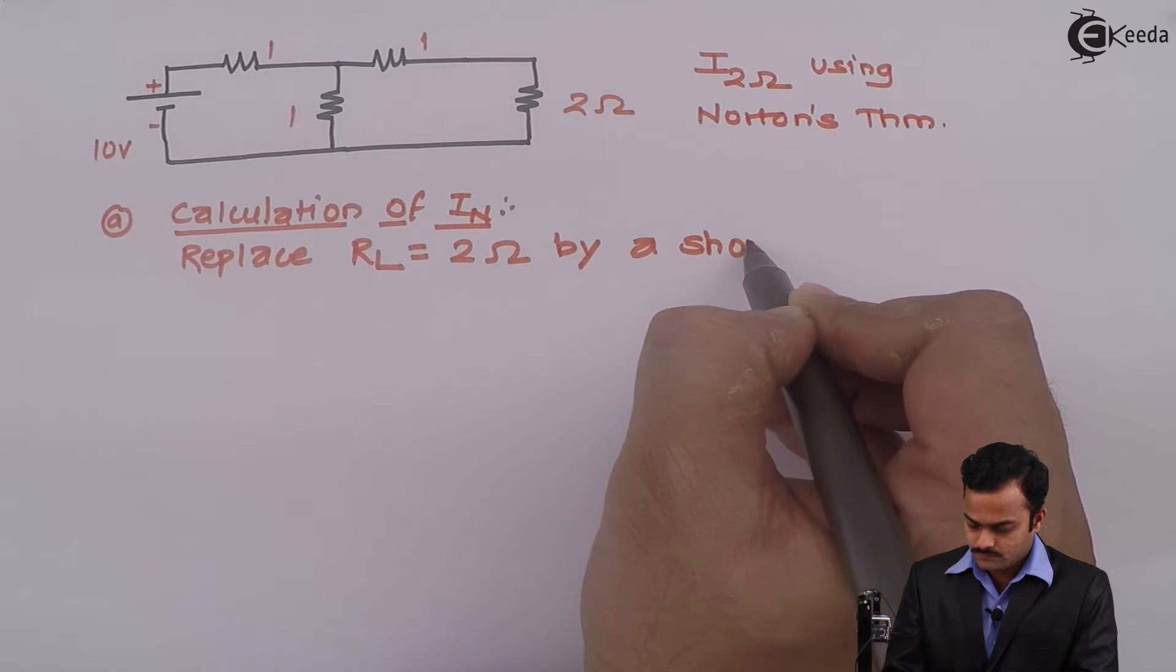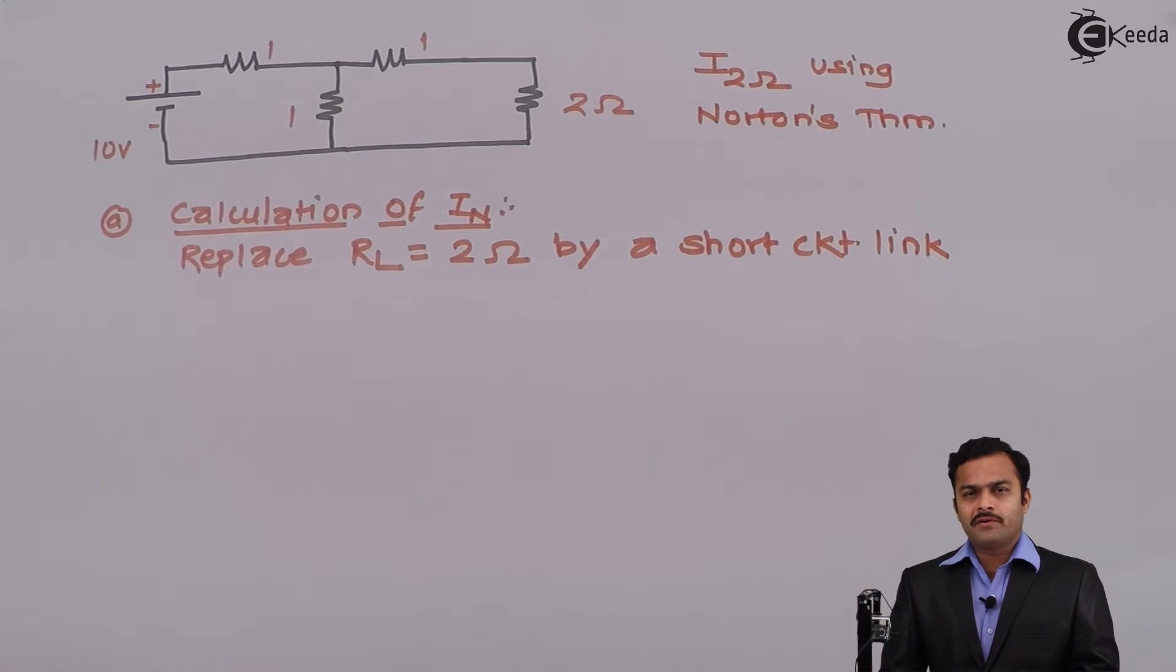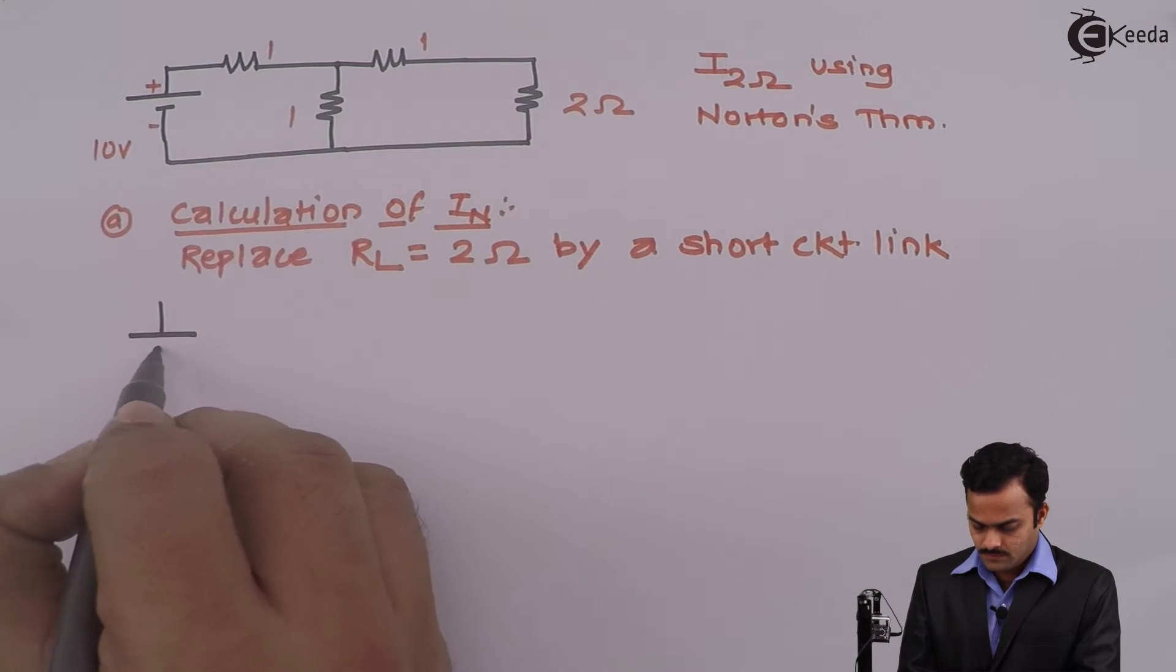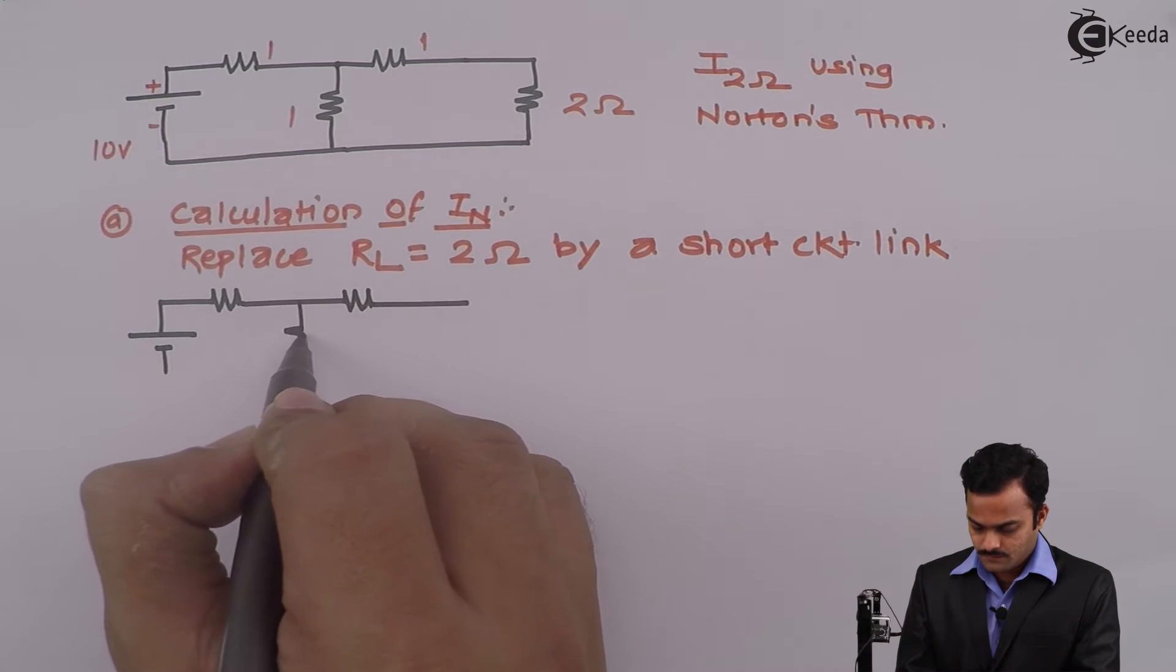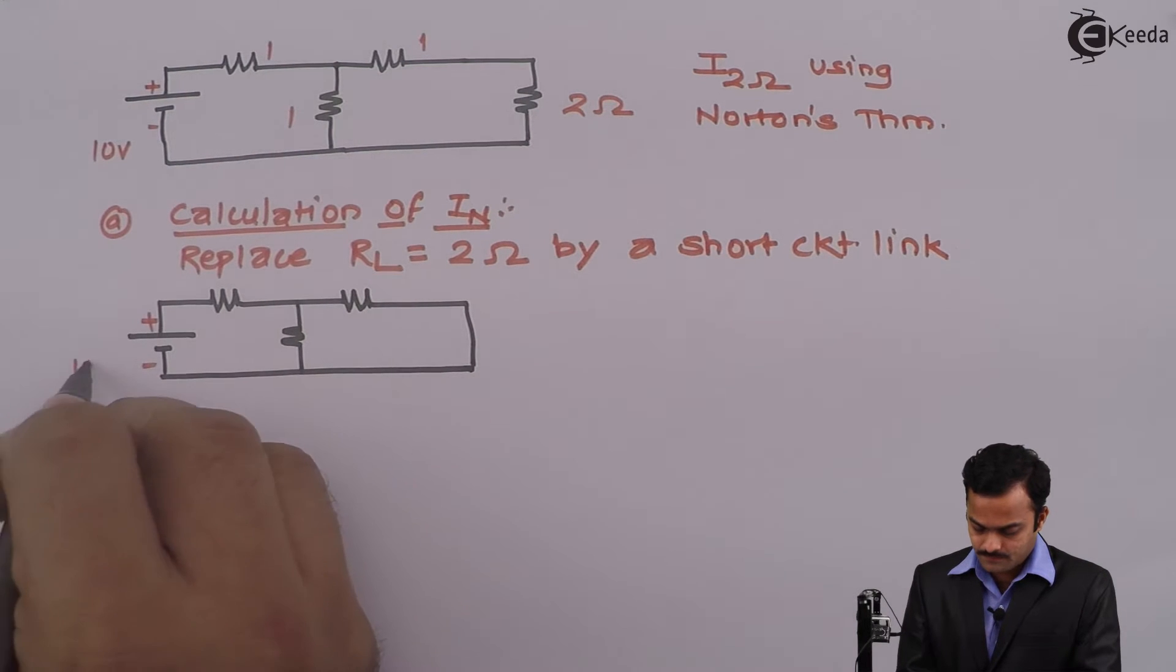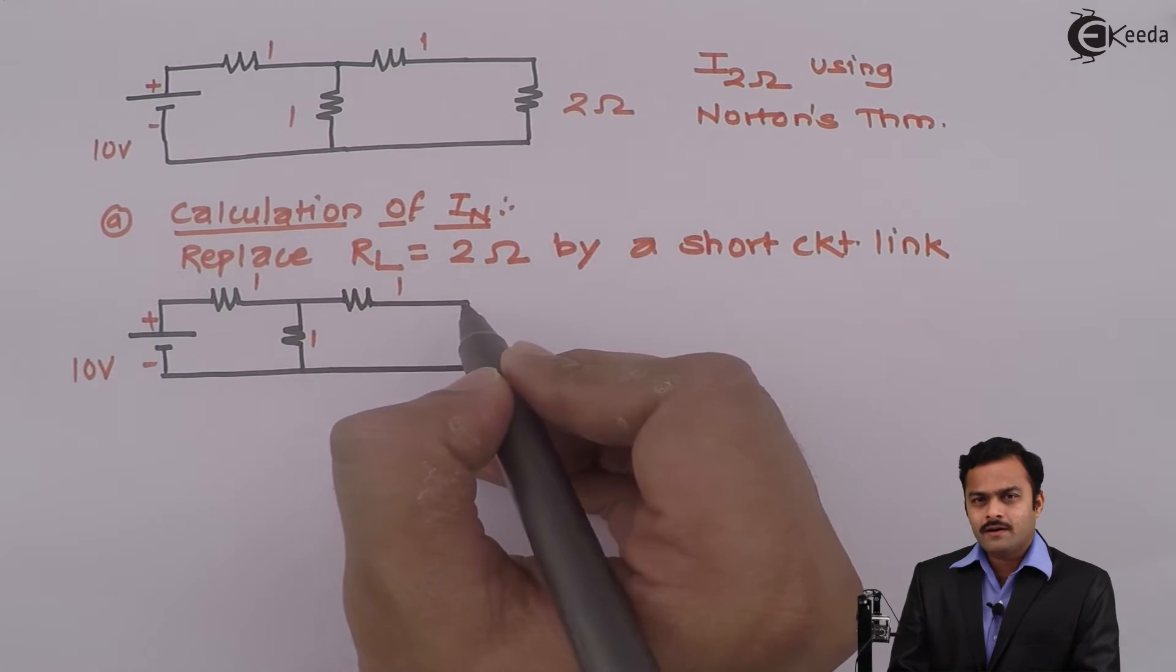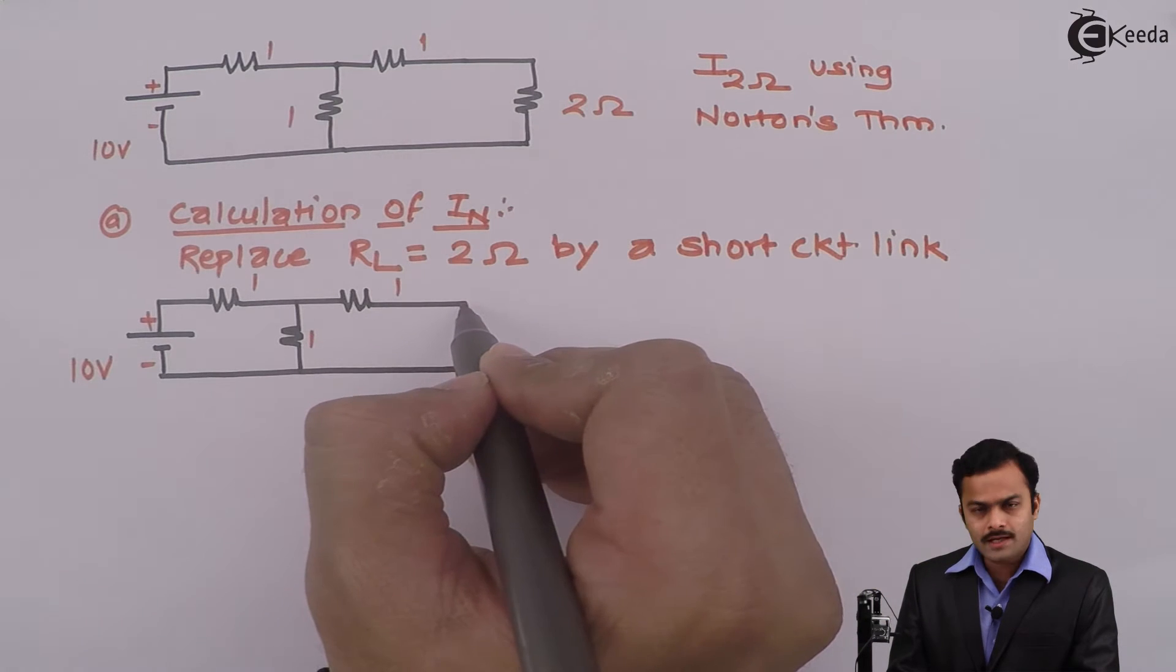This is the only modification you have to make in the original circuit. Rest of the part of the circuit will remain the same, so wherever load resistance was connected I will name those terminals A and B.